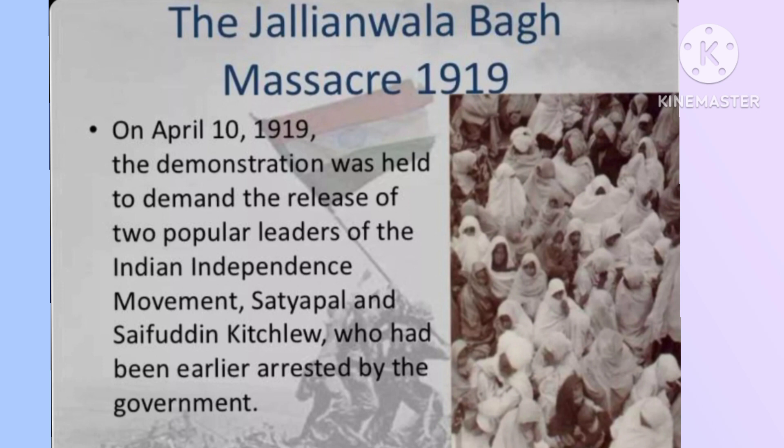Lord Lytton brought in the Vernacular Press Control Act in 1878. Lord Ripon brought in the Ilbert Bill. The Vernacular Press Control Act was to exercise control on Indian publications. The Ilbert Bill was to bring in uniformity in the judicial system. And the INC was formed in 1885 by A.O. Hume.